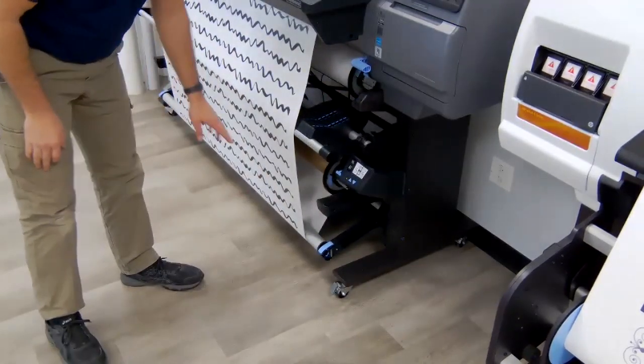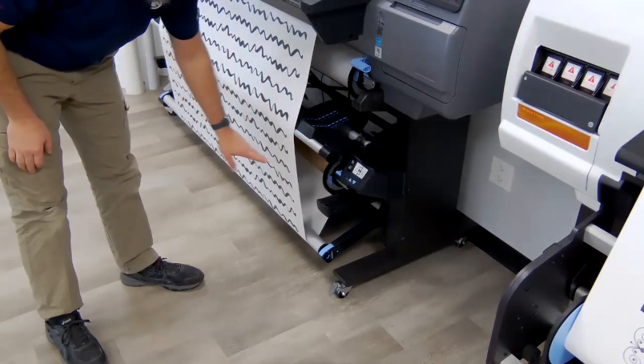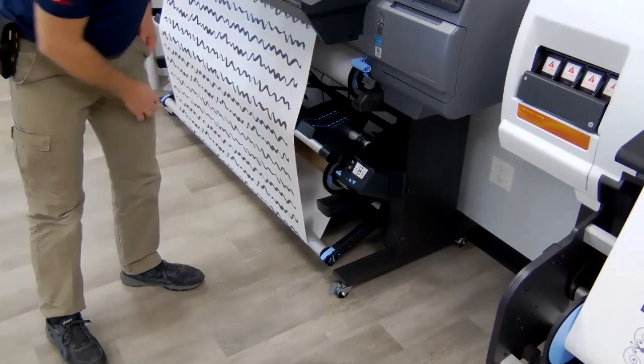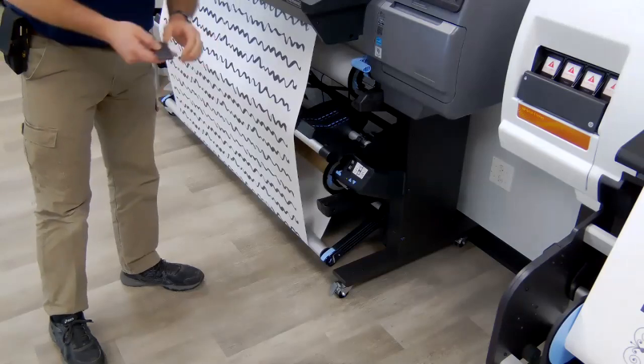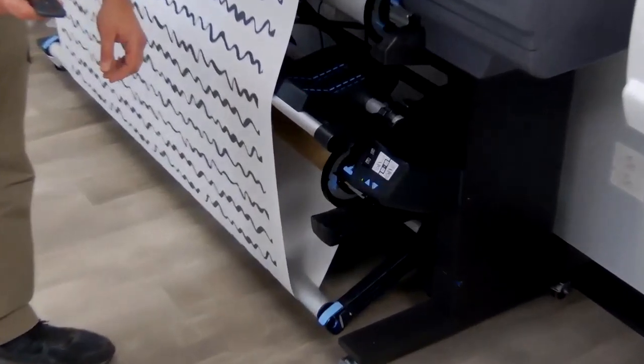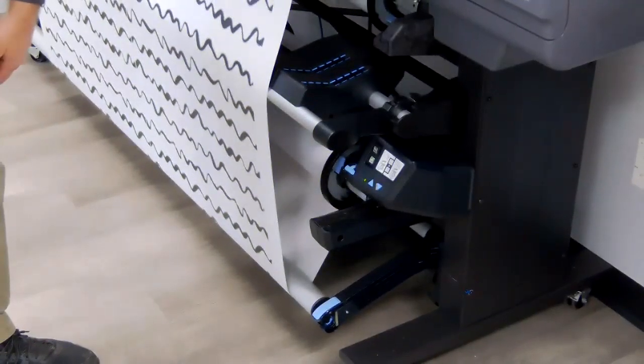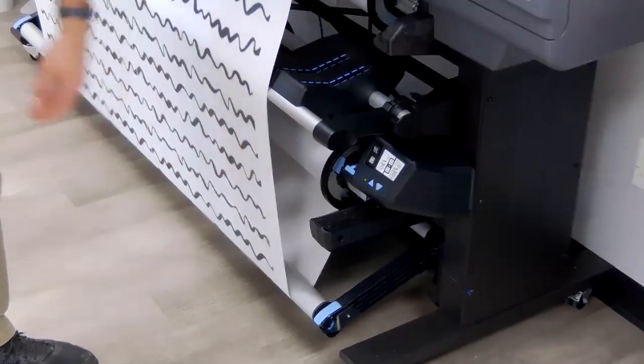And now before I engage that take-up reel, I want to make sure there's enough material going on here. And now I'm gonna switch it to the print side in. Zoom in a little bit so you can see how this takes shape. So once I engage it, now the dancer bar is going to be activated. And it's now controlling the take-up reel.